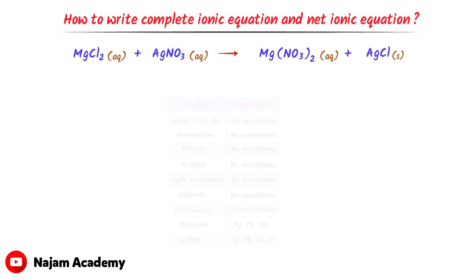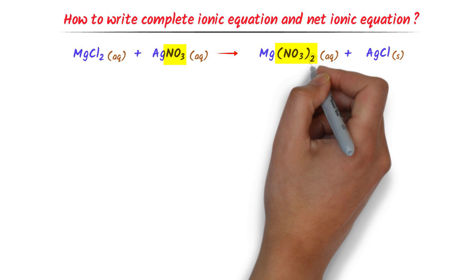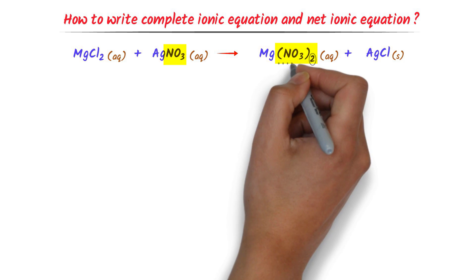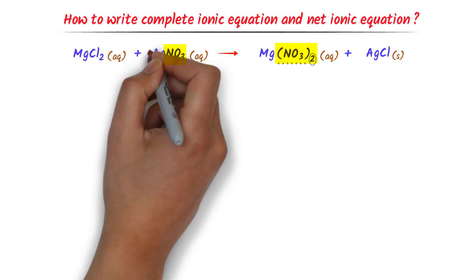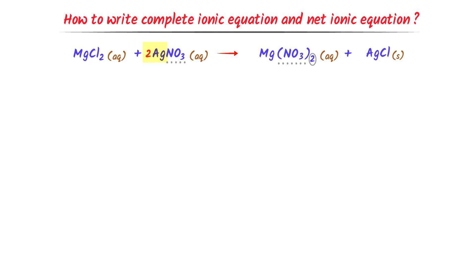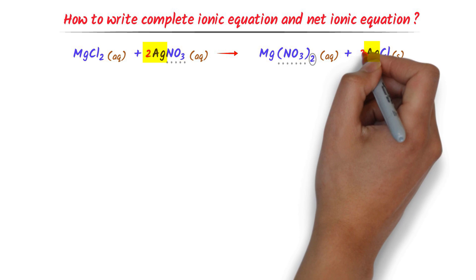The third step is to balance the chemical equation. I start balancing from the anions like the nitrate ion. At the right-hand side, the subscript 2 means there are two nitrate ions, while at the left-hand side there is only one nitrate ion — I place a 2 there. Secondly, this 2 with silver means there are two silver ions, while at the right-hand side there is only one silver ion — I place a 2 there as well.